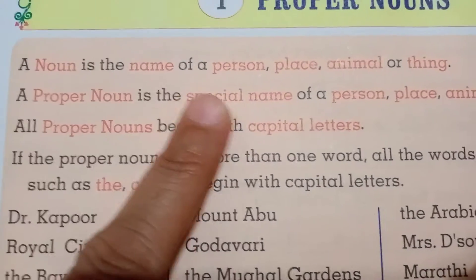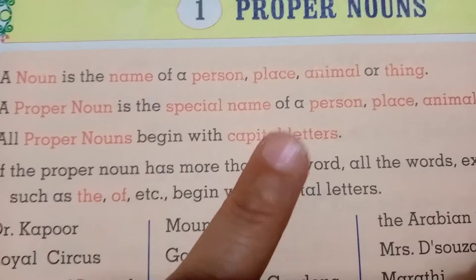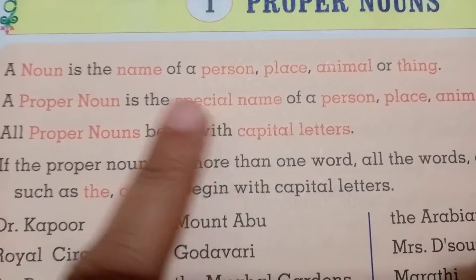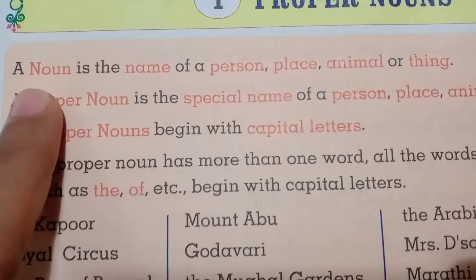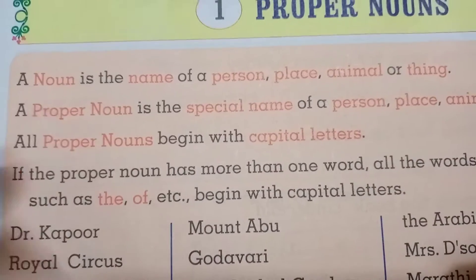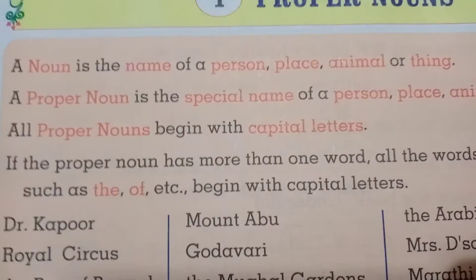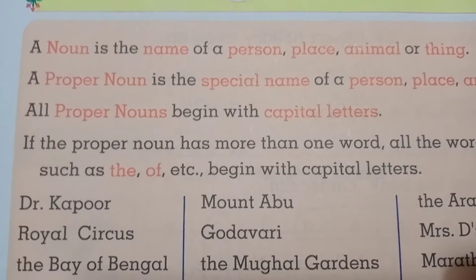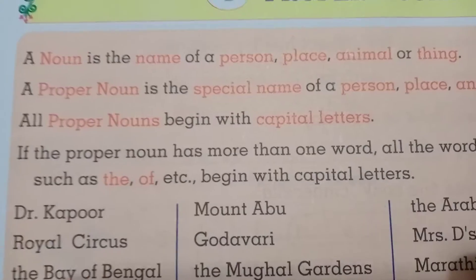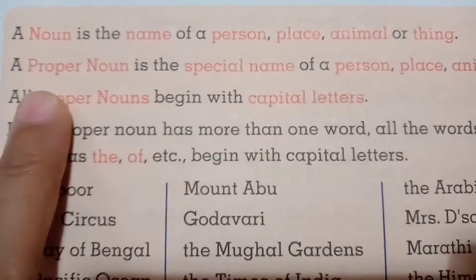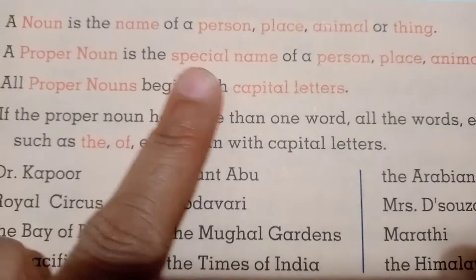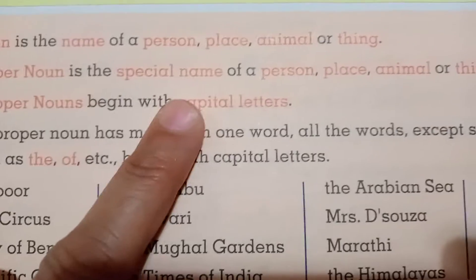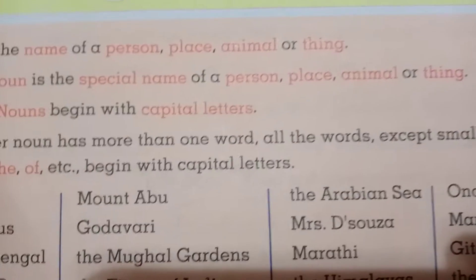A noun is the name of a person, place, thing, or animal. Noun क्या है? Name of a person, place, animal, or thing. A proper noun is the special name of a person, place, animal, or thing.